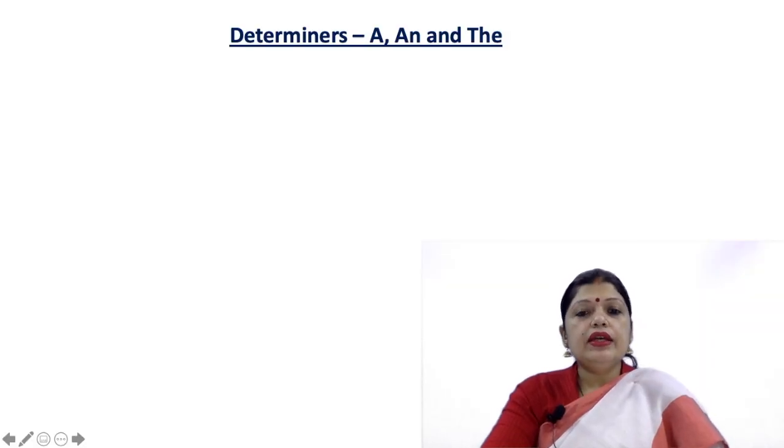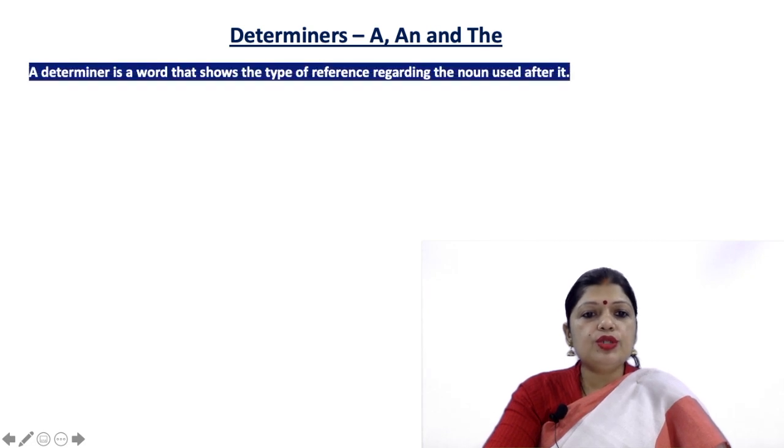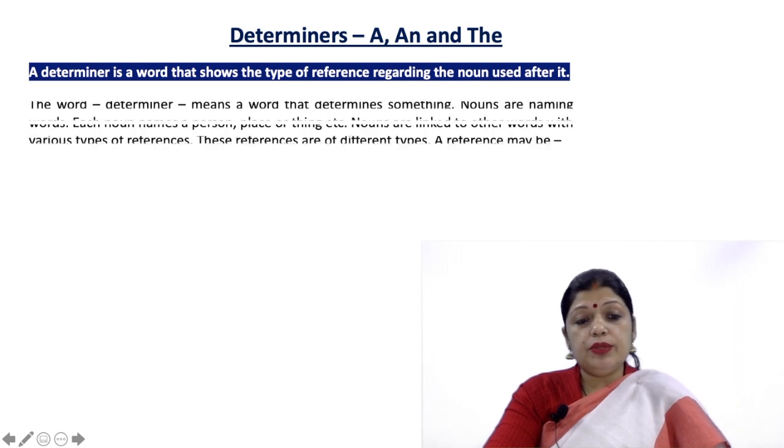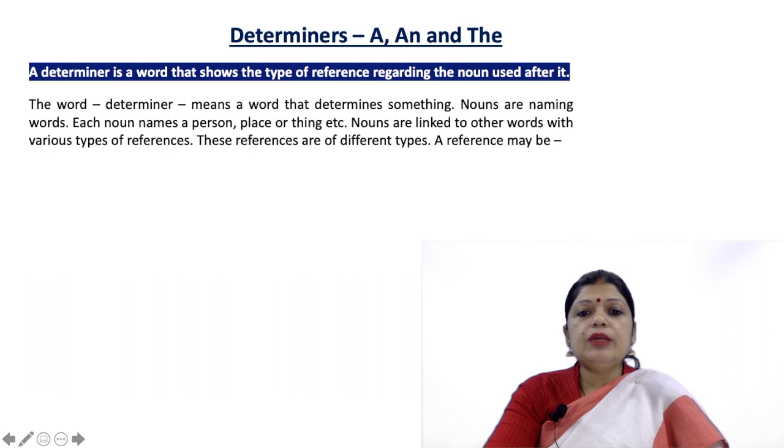Determiners: A, An and The. A determiner is a word that shows the type of reference regarding the noun used after it. The word determiner means a word that determines something. Nouns are naming words. Each noun names a person, place or thing. Nouns are linked to other words with various types of references.